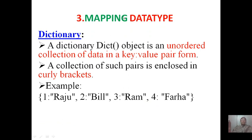Dictionary, which is a mapping data type. Dictionary or dict is an object and an unordered collection of data in a key value pair form. Collection of such pairs is enclosed in curly braces. One: Raju, Two: Bill, Three: Ram, Four: Farah - these are the names. Key is one, Raju is the value. Key is two, Bill is the value. Like this, key value pairs which are enclosed in curly brackets is considered as a dictionary.